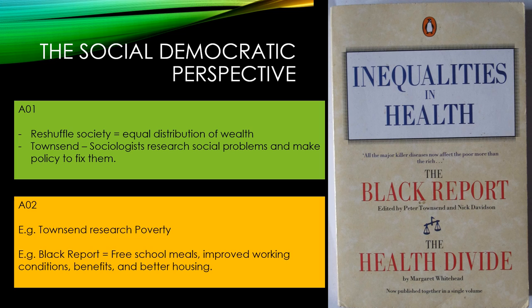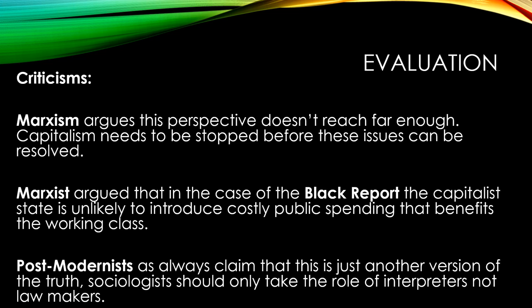For evaluation: the Black Report was commissioned by the Labour government in 1977 but only finished in 1980. By then, Thatcher's government had come to power and failed to implement many recommendations due to cost. Marxists argue these recommendations don't go far enough — they don't solve capitalism — and that the capitalist state is unlikely to introduce public spending that benefits the working class at the expense of the ruling class. Postmodernists claim this is just another metanarrative and sociologists should only be interpreters, not lawmakers.